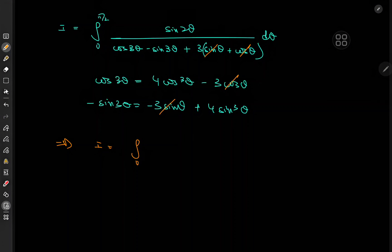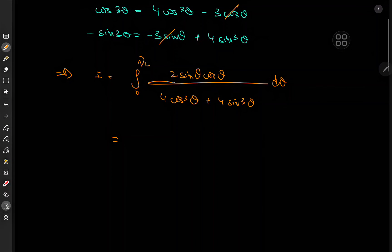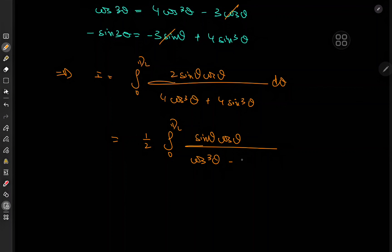This implies that I is the integral from zero to π/2 of sin(2θ) — expanded as 2sinθ·cosθ — over a denominator where the surviving terms are 4cos³θ plus 4sin³θ. We can factor out a 2 and a ½, leaving us with one half of the integral from zero to π/2 of sinθ·cosθ over cos³θ + sin³θ dθ — which looks absolutely gorgeous.